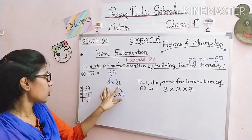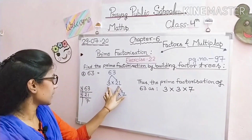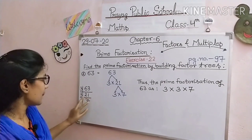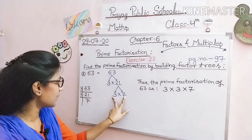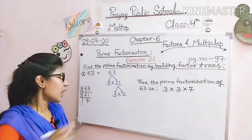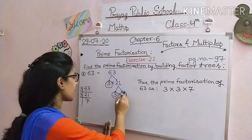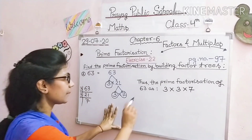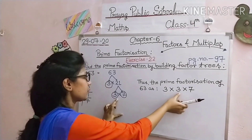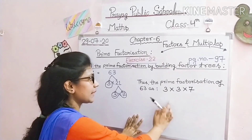Factor tree method से: 63 को solve करेंगे — 3 multiplied by 21. 3 prime number है, इसे छोड़ देंगे। 21 को solve करेंगे: 3 × 7 = 21. अब process stop हो गया क्योंकि सारे numbers prime हो गए। Prime numbers को circle कर लेंगे: 3, 3, और 7. Statement लिखेंगे: The prime factorization of 63 is 3 × 3 × 7. Process को multiply करके result दिखाना नहीं है।